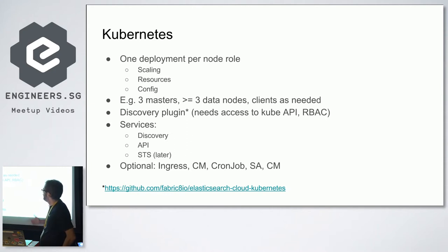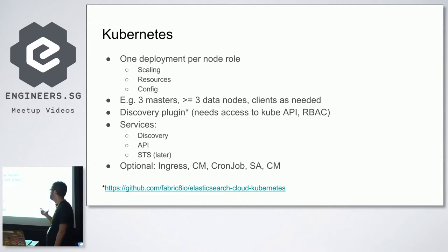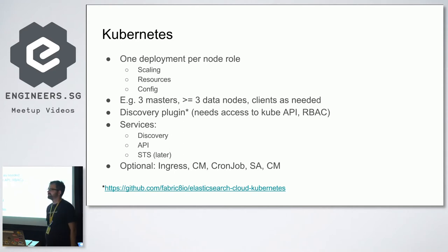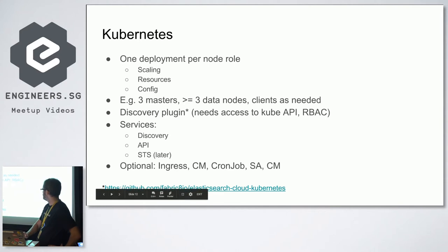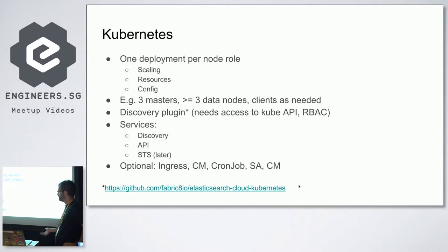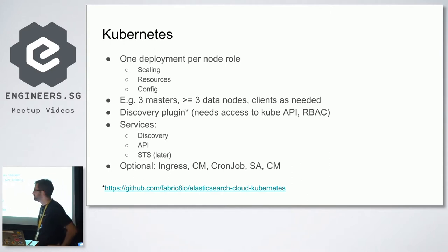You need a discovery plugin for Kubernetes. The way discovery works in Elasticsearch is pluggable, and there's a specific plugin for Kubernetes. The Docker image we're using has everything built in already. Essentially it's a base Elasticsearch Docker image with that plugin installed — not very complicated.